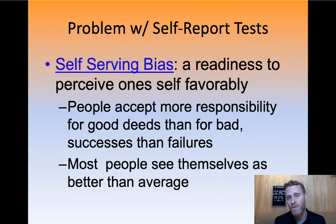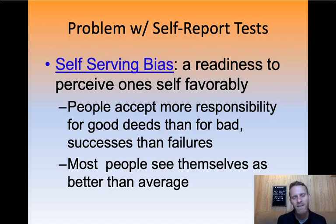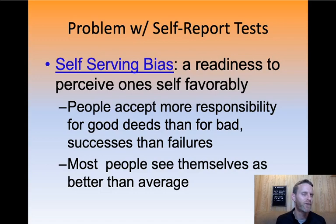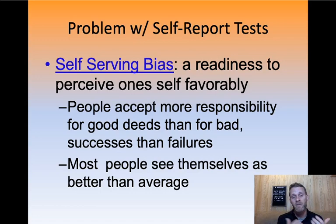One specific psychology term to put with this is the self-serving bias: we perceive ourselves more favorably than we probably should. We view ourselves as better than average most of the time, even though that flies in the face of the term 'average.' It's proven in society as well — people all the time accept more responsibility for things they do that are good and celebrated, but maybe don't accept responsibility for things that are bad. We're always ready to raise our hand and say we did the right thing, but when it comes to us messing up and failing, we don't take responsibility for that as quickly.